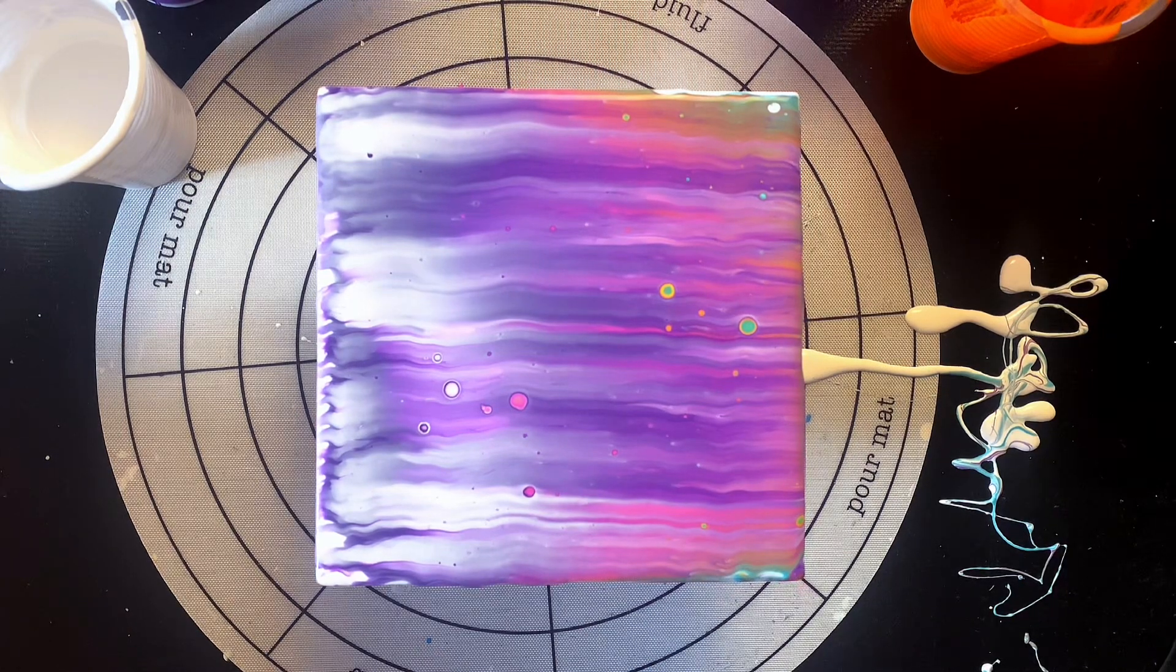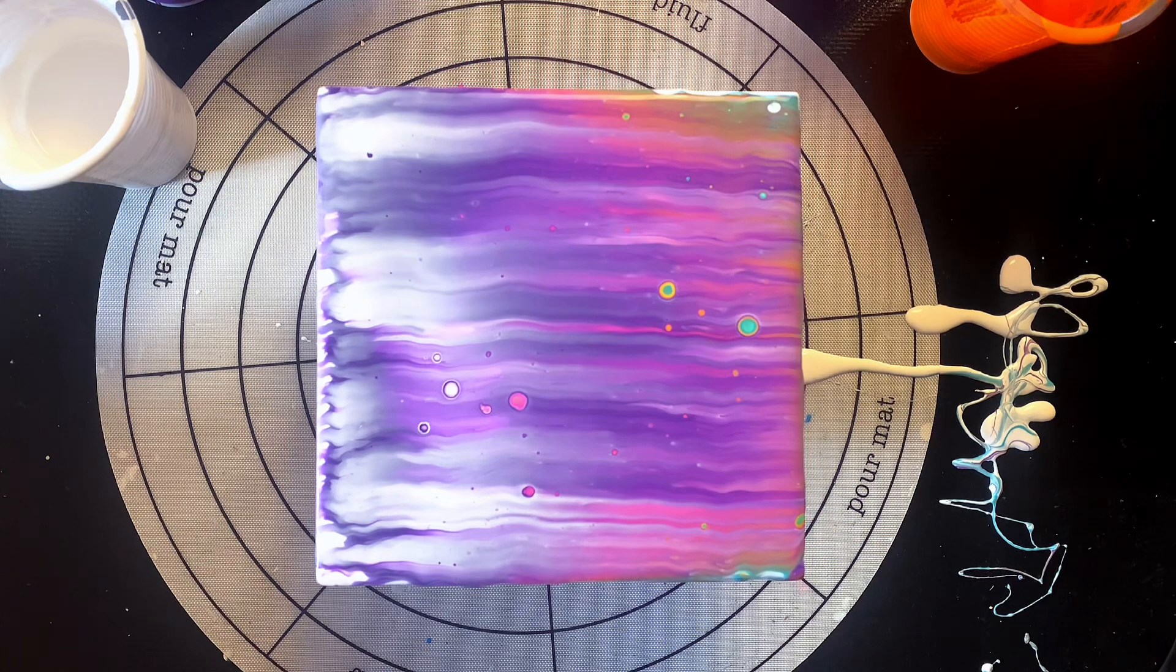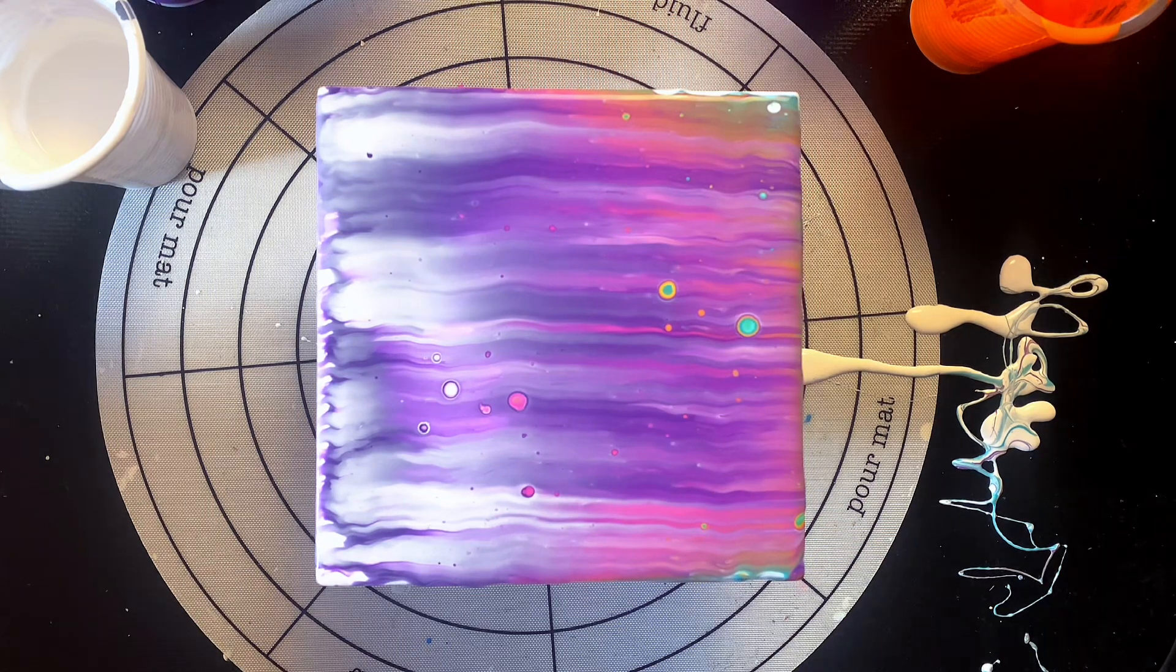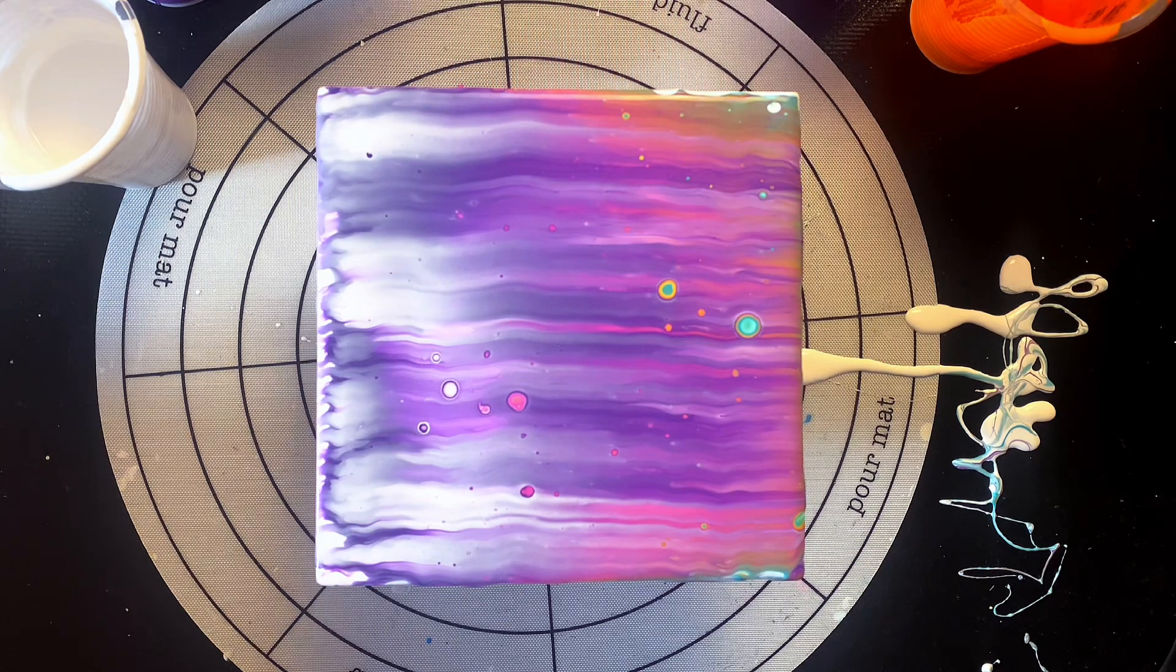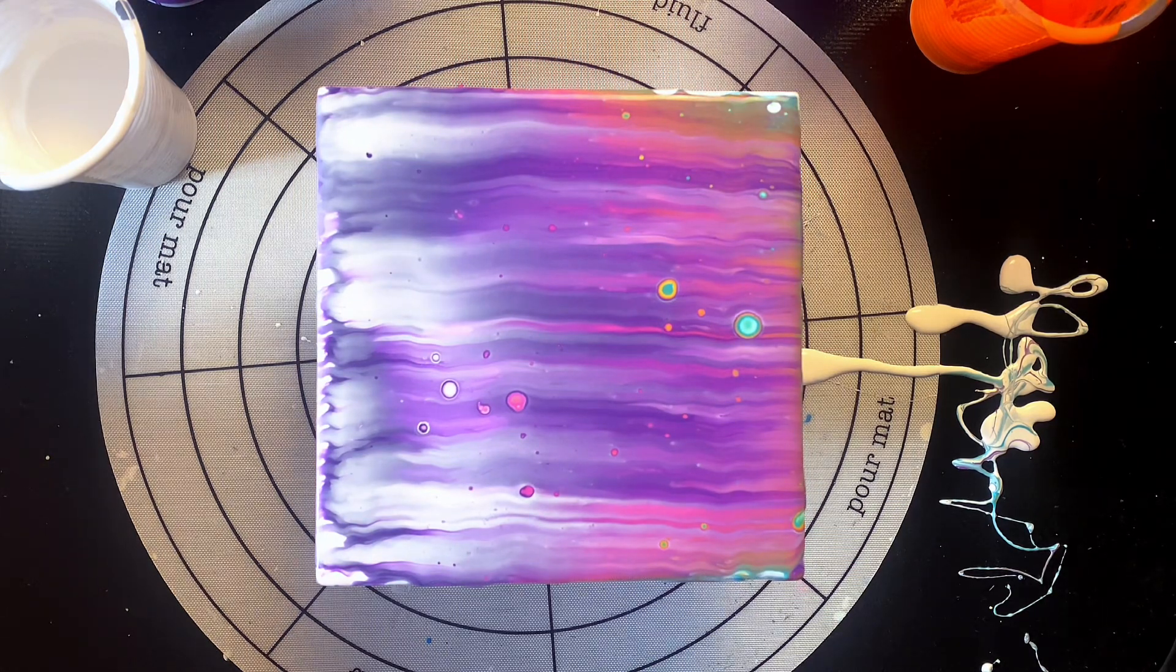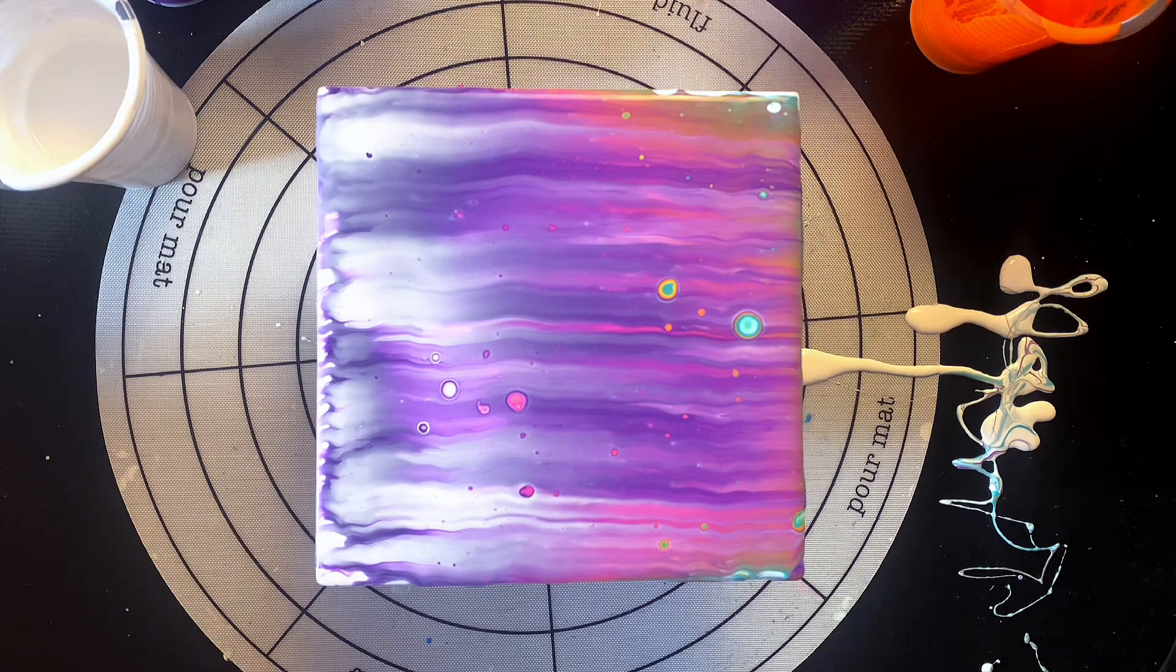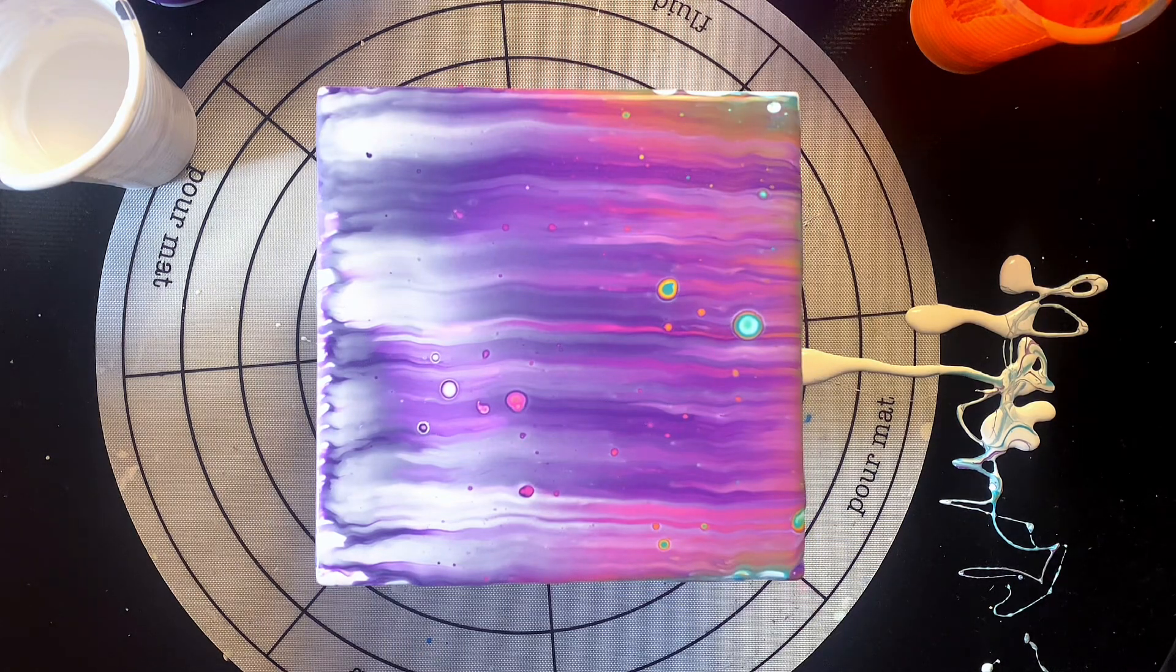And here's the thing: if you're not using flow twirl, this is what it's supposed to look like. Flow twirl will help the cells jump to the surface without using any heat, but if you're using retail pouring medium, if you're using PVA glue and water, if you're using varnish like me, any of the elastic pouring mediums, you will need a heat source to bring them to the surface.